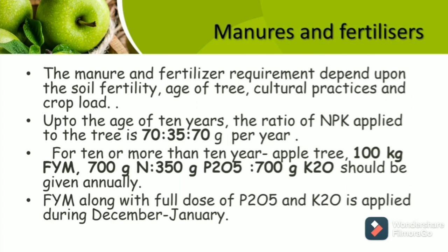Regarding manures and fertilisers: The manures and fertilisers requirement depends upon the soil fertility, age of tree, cultural practices, and crop load. Up to the age of 10 years, the ratio used is 70:35:70 grams per year per tree of NPK. For above 10 years, 100 kg of FYM, 700 grams of nitrogen, 350 grams of phosphorus, and 700 grams of potassium should be given annually. FYM along with full doses of P₂O₅ and K₂O is applied during December and January. Nitrogen is given in split doses, and areas with high rainfall and leaching problems should be given water-soluble fertilisers.